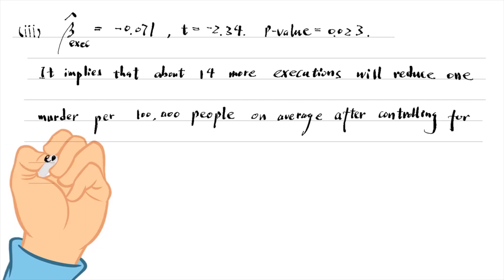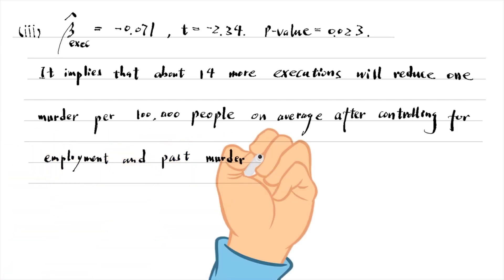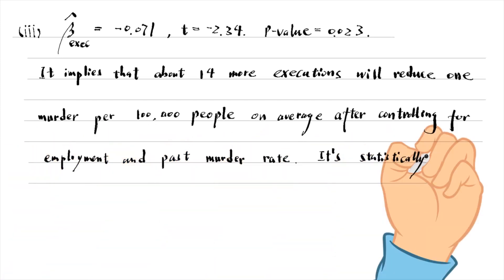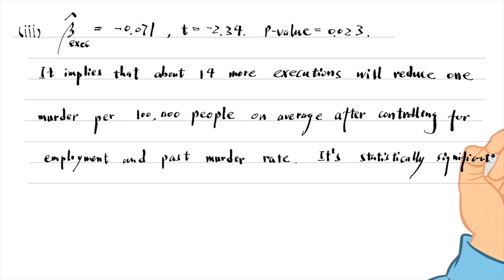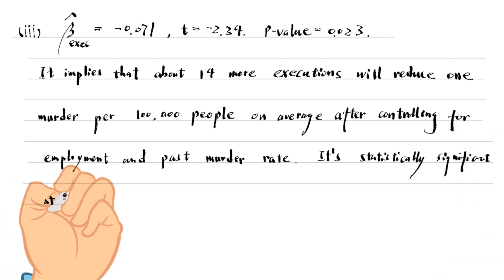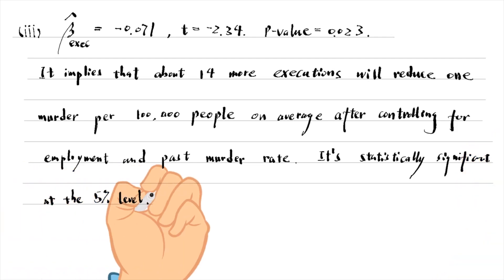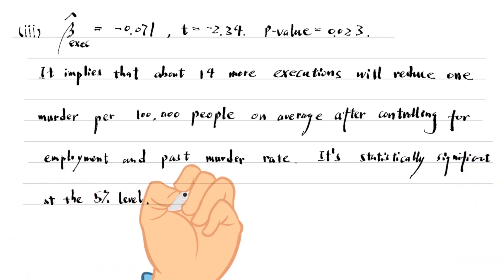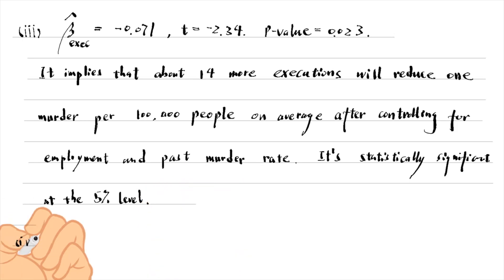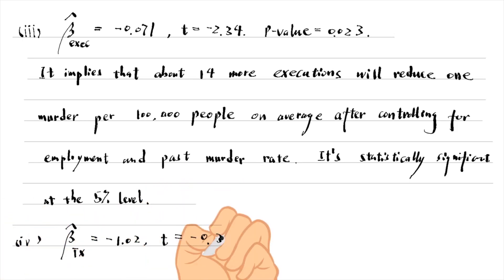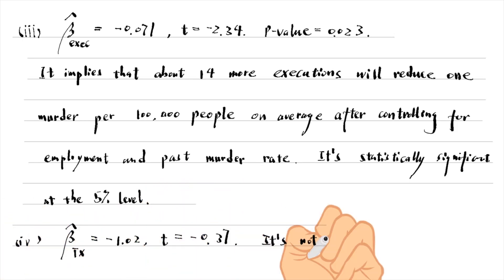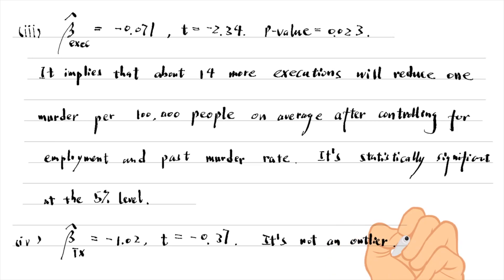The effect is small, but it is statistically significant at the 5% level, with a t-statistic of minus 2.34. For part 4, the estimate for the coefficient on Texas is minus 1.02, and the t-statistic is tiny, minus 0.37. It is not an outlier.